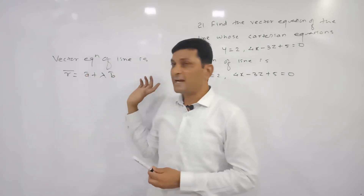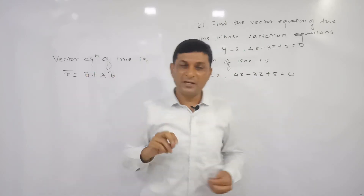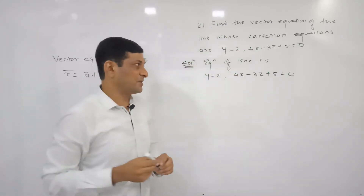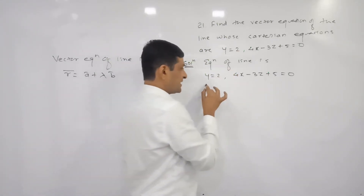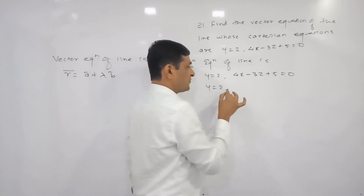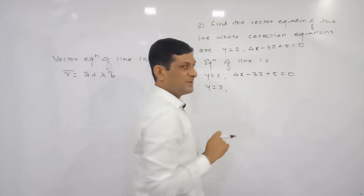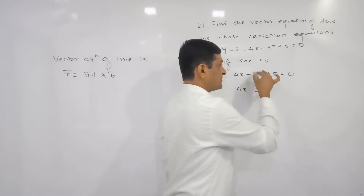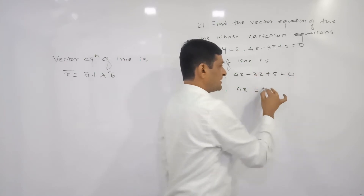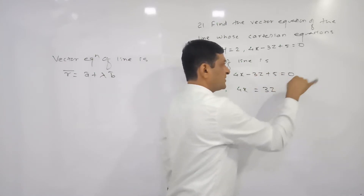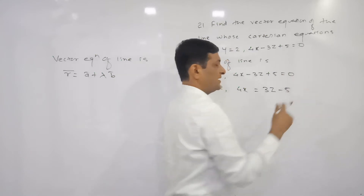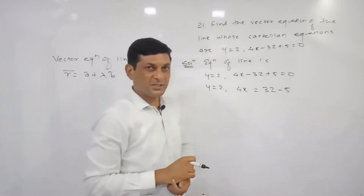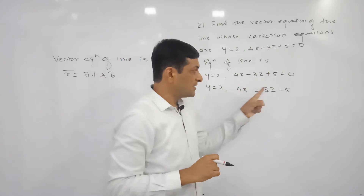To find the vector equation we require the values of a⃗ and b⃗, which we find using the Cartesian equation. The Cartesian equation is not in standard form, so we simplify it: 4x, and minus 3z on one side becomes plus 3z, and plus 5 becomes minus 5.